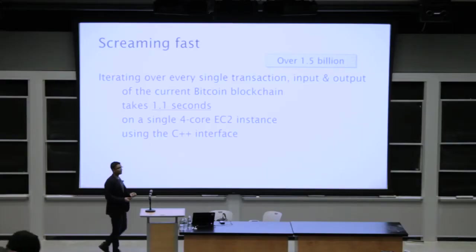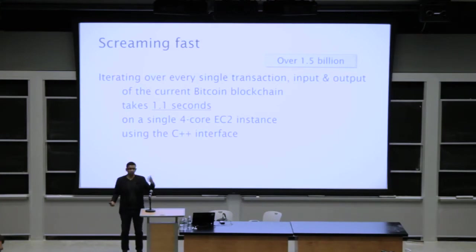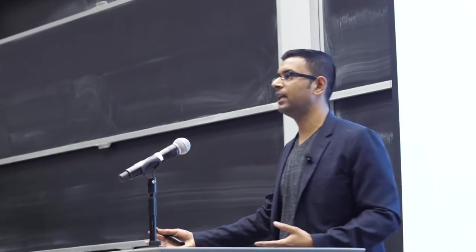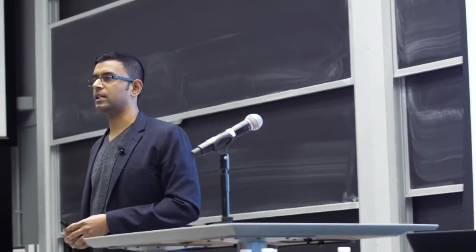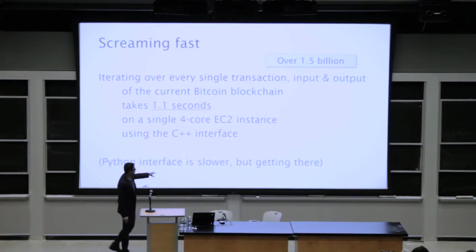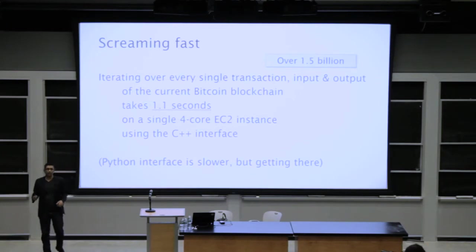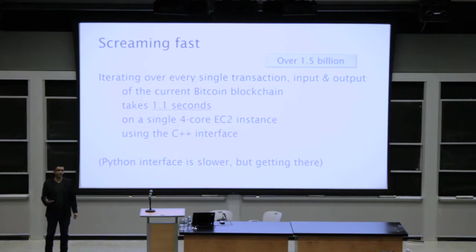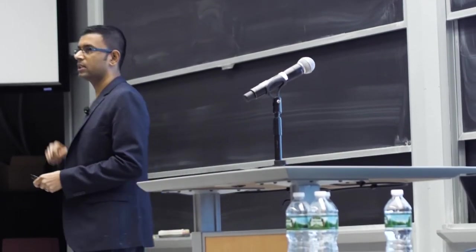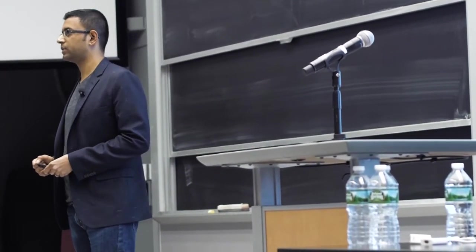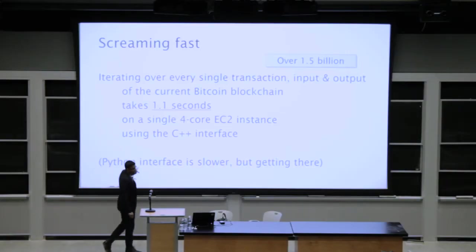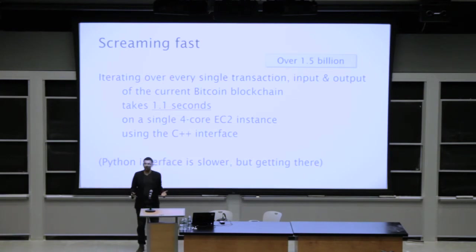This is what you get with an in-memory representation. When you can do a complete linear search, you don't need a fancy database or fancy index. Our Python interface is definitely slower, but we're working on improving performance so you can write vectorized operations in Python — similar to NumPy — that will be translated down to C++ and execute at C++ speed. That's our next goal: complete expressiveness of Python with the performance of C++.